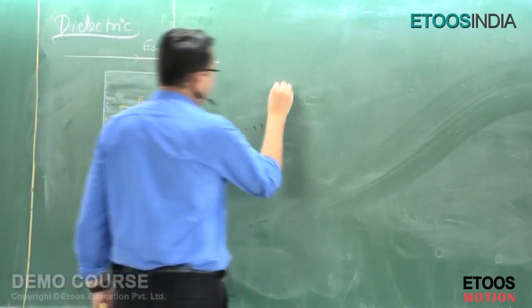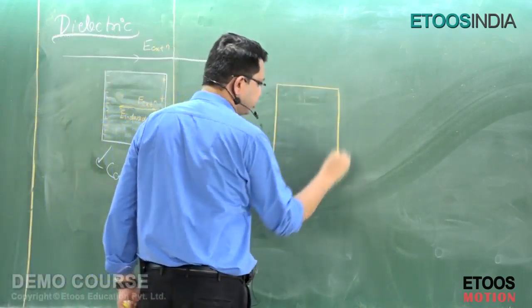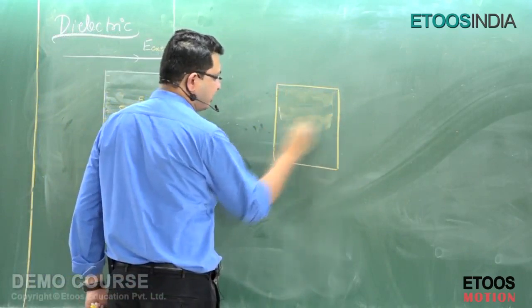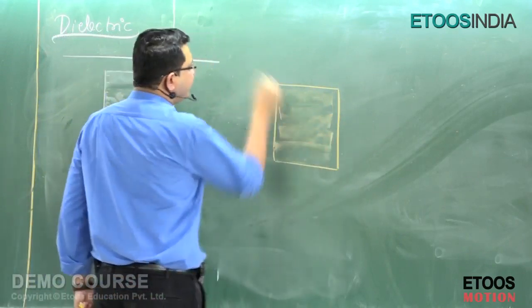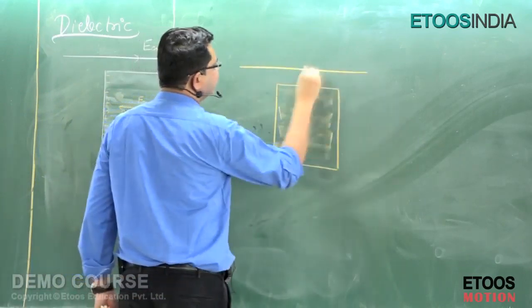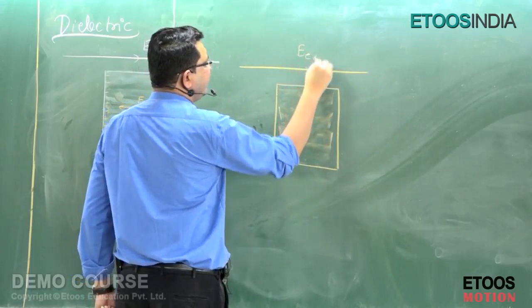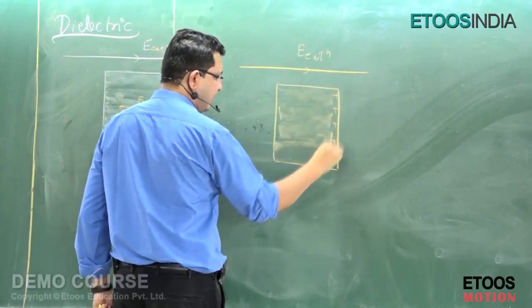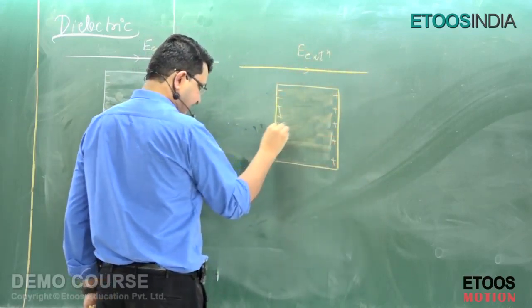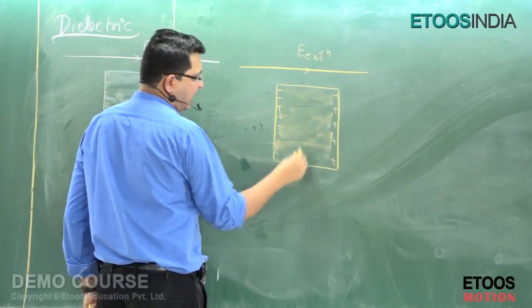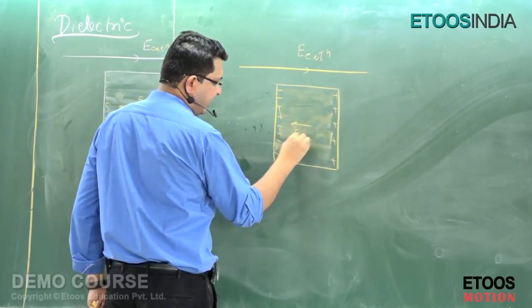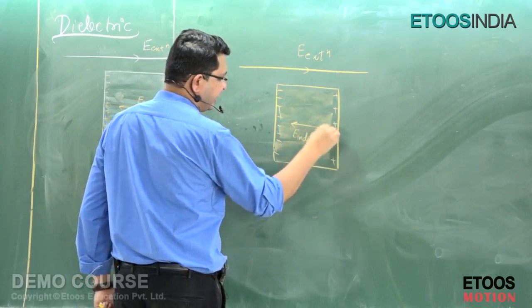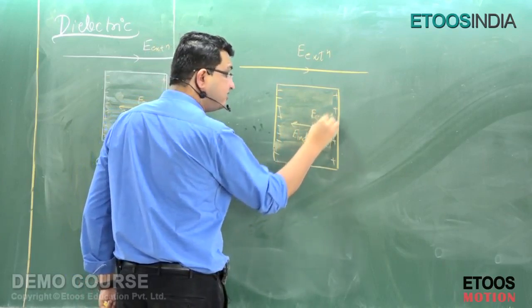Remember that if we have a material, we will call it a dielectric — which is essentially an insulating or normal material. If I apply an external electric field E, we know that here it will become plus and here it will become minus. So E induced and E external are present, but the net will not be zero.